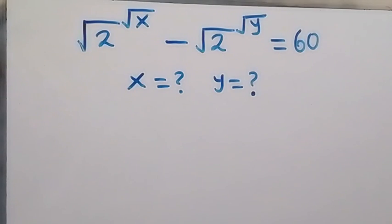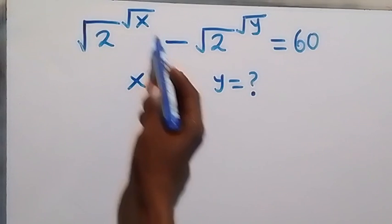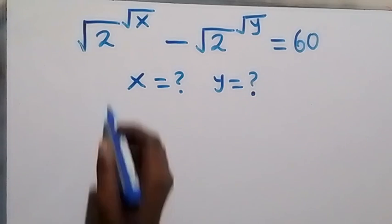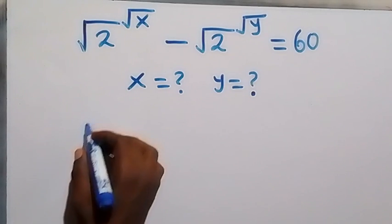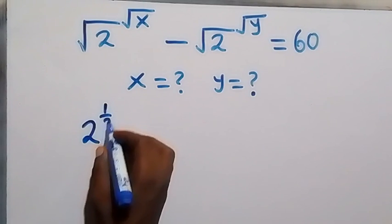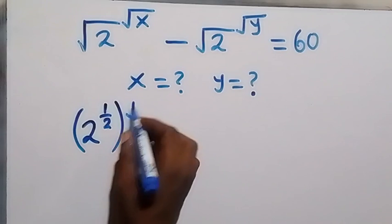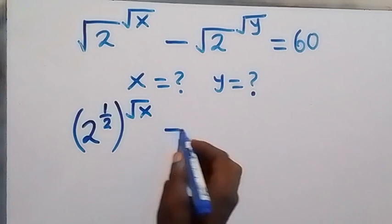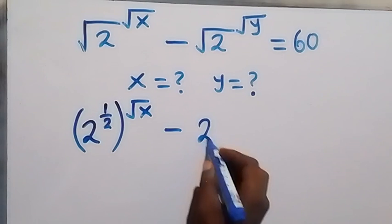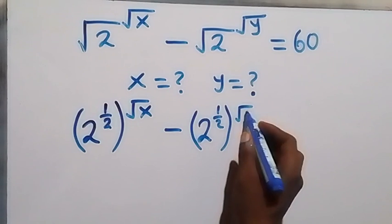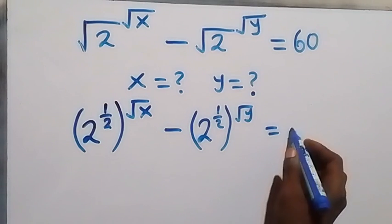Hello, you are welcome. How to solve this nice exponent problem involving roots. We have √2 raised to power √x minus √2 raised to power √y equals to 60. From here, let's rewrite this as 2 raised to power half — that's √2 — then raised to power √x, then minus also 2 raised to power half, then raised to power √y, equals to 60.